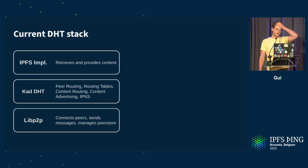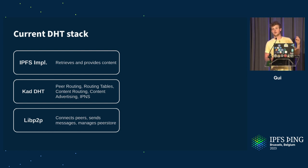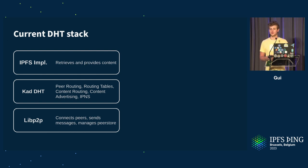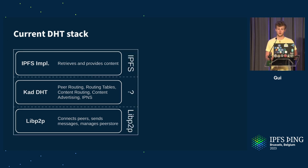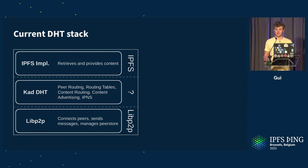The current stack has the IPFS implementation on top, depending on KadDHT for routing, which uses LibP2P to communicate. We have IPFS implementations, obviously, in IPFS LAN, LibP2P, and LibP2P LAN. But KadDHT sits in between — it's supposed to be part of LibP2P, but it has a lot of IPFS-centric features.